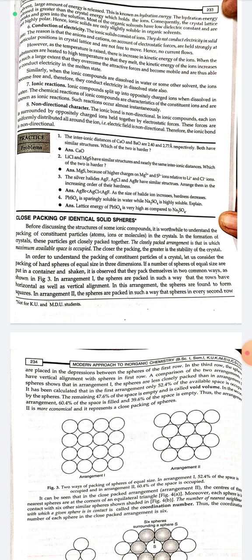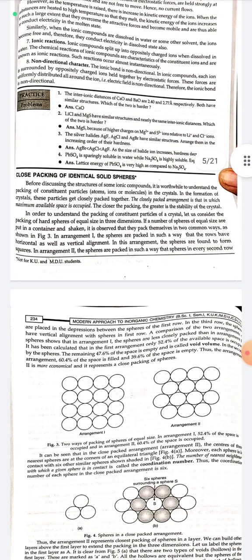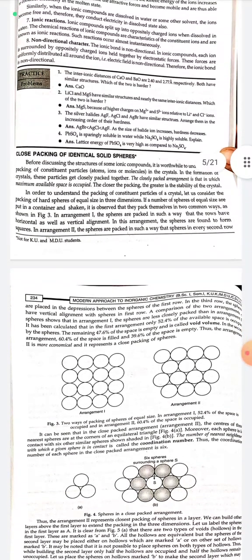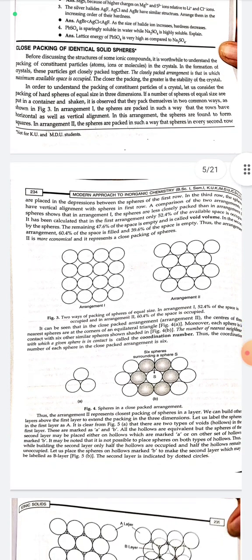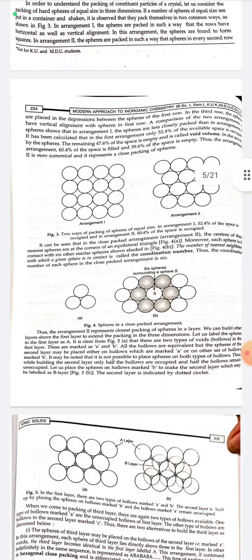To understand the packing of constituent particles of a crystal, consider the packing of hard spheres of equal size in three dimensions. If spheres of equal size are put in a container and shaken, they pack themselves in two common ways. In arrangement one, the spheres are packed so that the rows have horizontal as well as vertical alignment. In arrangement two, every second row is placed in the depressions between the spheres of the first row.